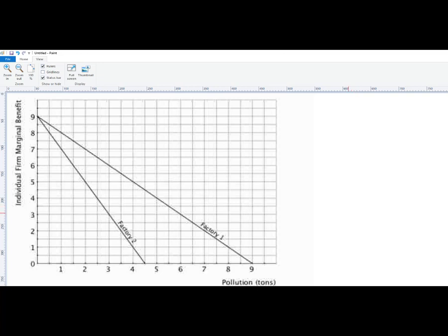Factory, so this is a little different because we've got, on the y-axis, individual firm marginal benefits. So this is the price that they're willing to pay, or the benefit from polluting. And then on the quantity axis, we've got the amount of pollution. So really, this is a market for pollution, and that's how to read this.